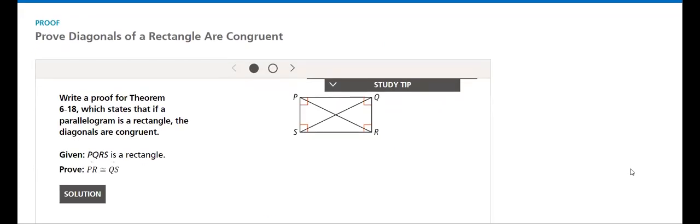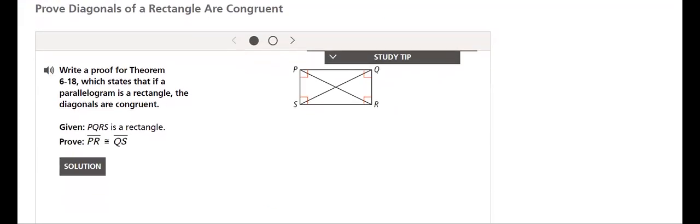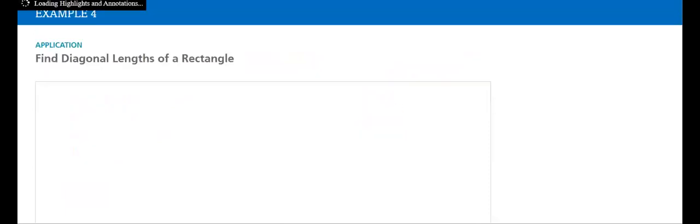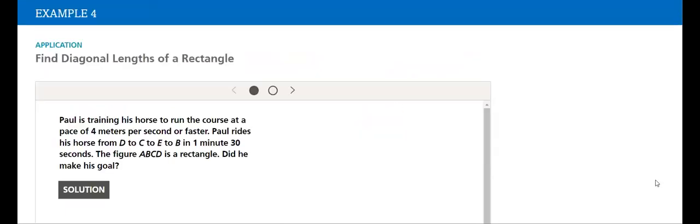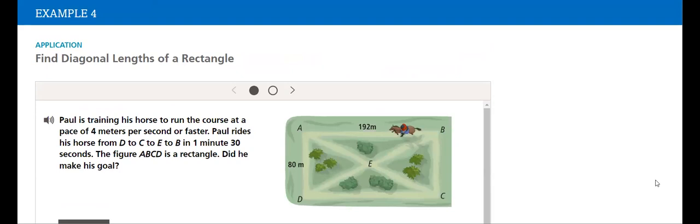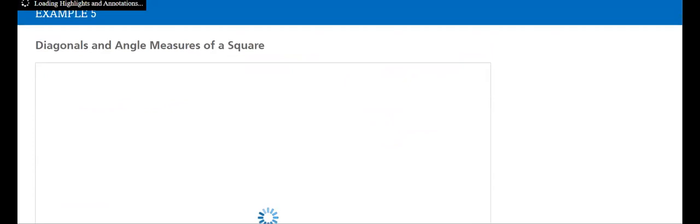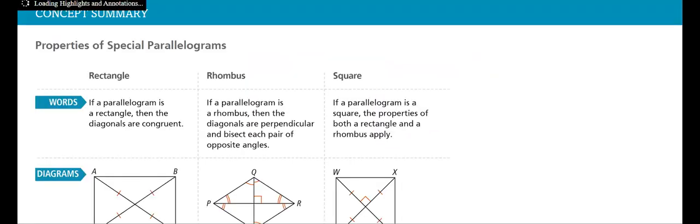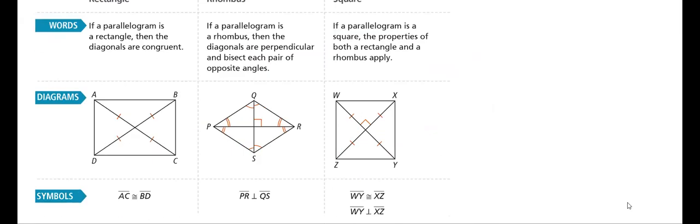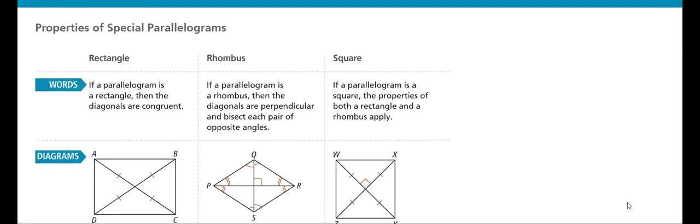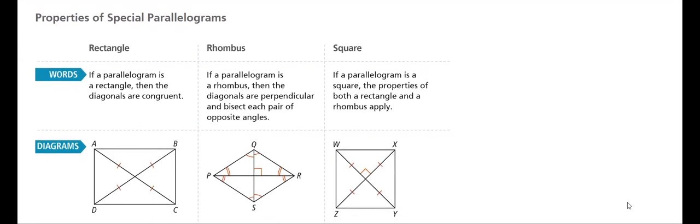And then we will prove that the diagonals of a rectangle are congruent. Then we will find the diagonal length of a rectangle. We know that since there is a right angle, the Pythagorean theorem is always there and we can use it. And then there is a summary for what we discussed.